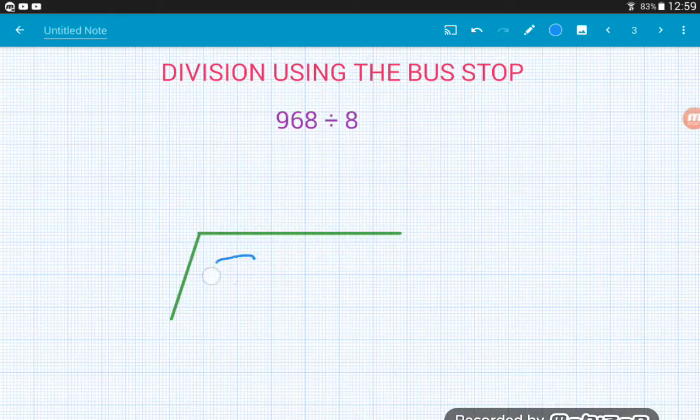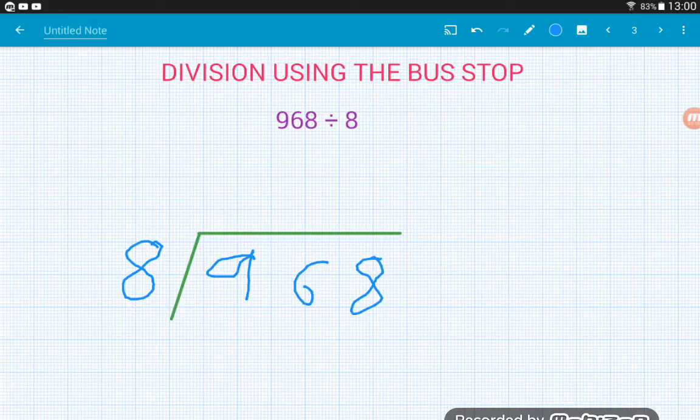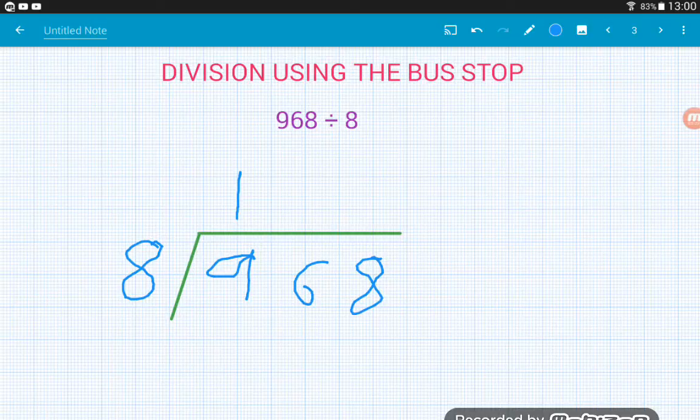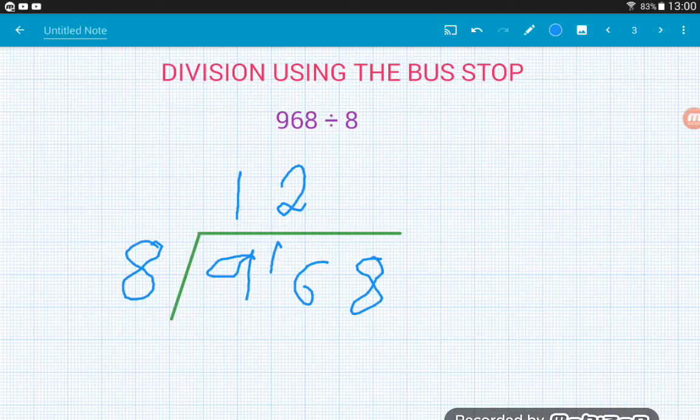968 divided by 8. So 968 sits inside, the 8 sits on the outside. Again we're going to get remainders flying around. So eights into 9 go once, and then 9 take away 8 is 1, so we've got a remainder of 1 to carry over to the 6. So that now becomes a 16. Eights into 16 go twice, and then eights into the 8 at the end goes once exactly.